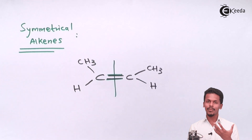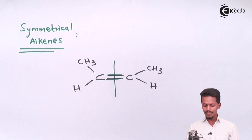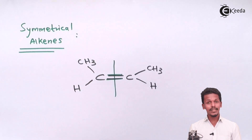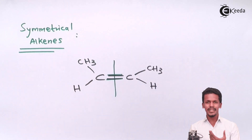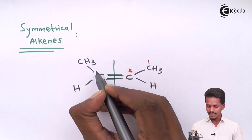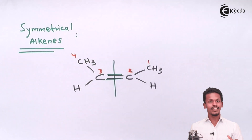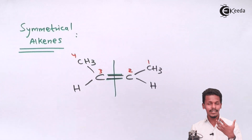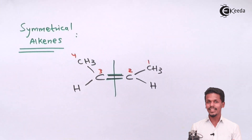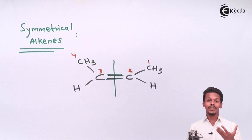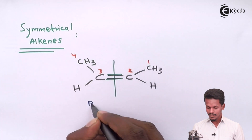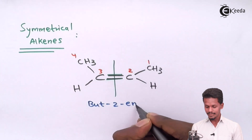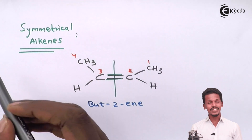Let me give the nomenclature — we will discuss IUPAC naming in a future lecture, but here is a small glimpse. The numbering starts from the carbon atom where the carbon-carbon double bond gets the least number. Since this is a symmetrical molecule, numbering can be given from either side. So: first, second, third, fourth — four carbon atoms in a straight chain. The carbon-carbon double bond starts from carbon number two. In alkane terms it would be butane, but this is an alkene with the double bond at position 2, so the name is but-2-ene. This is the symmetrical alkene.